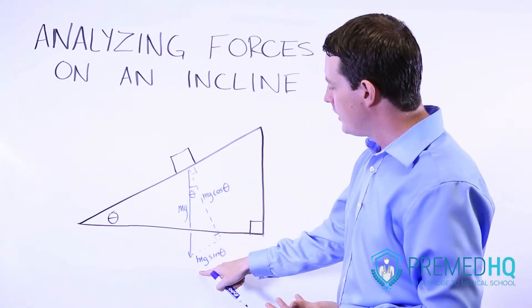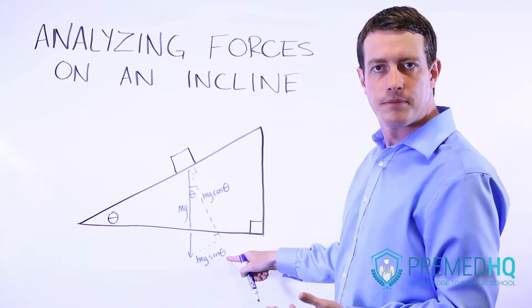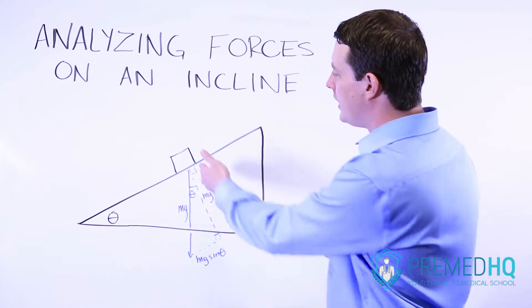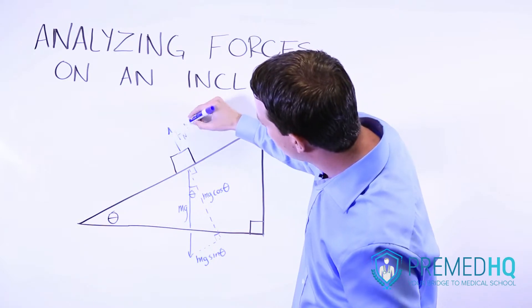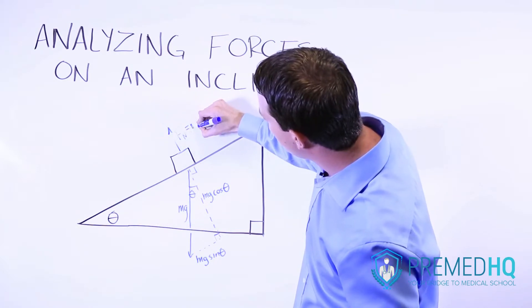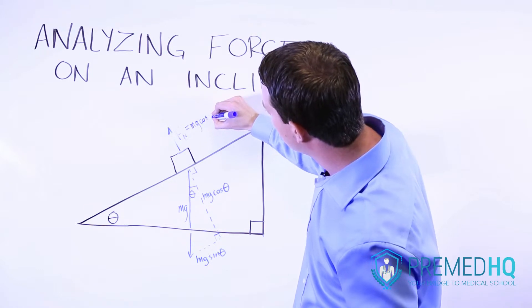And then this one down here is equal to mg sine theta. Where this becomes very useful is that this part here, the perpendicular one, is equal to the normal force. So the normal force will be equal to mg cosine theta.